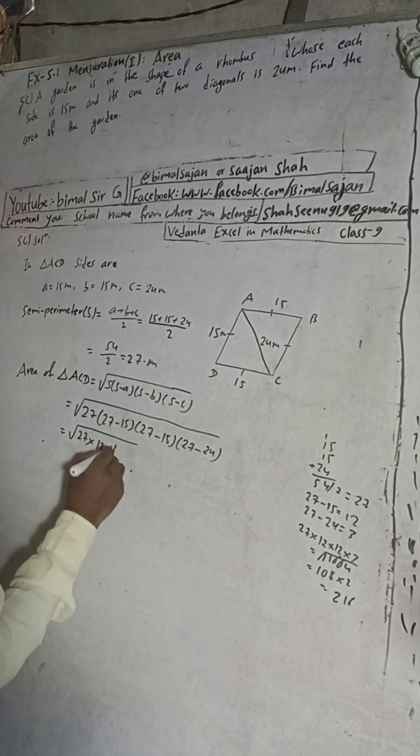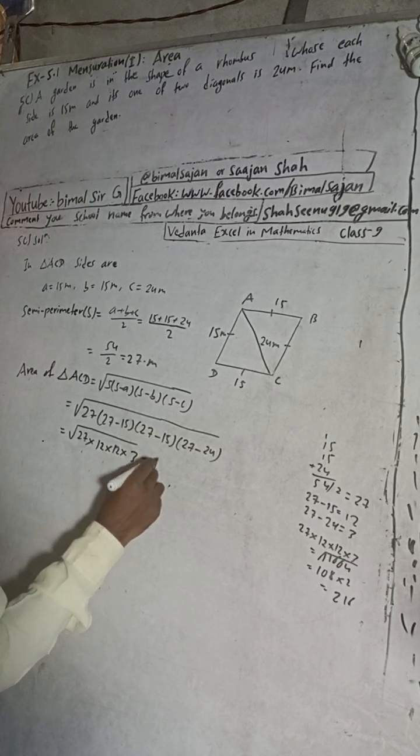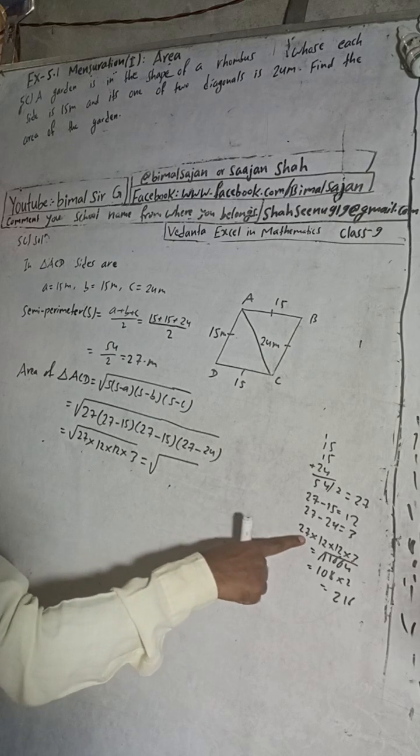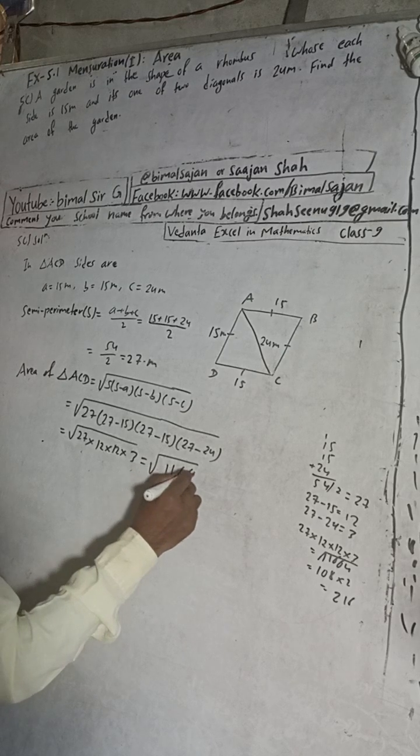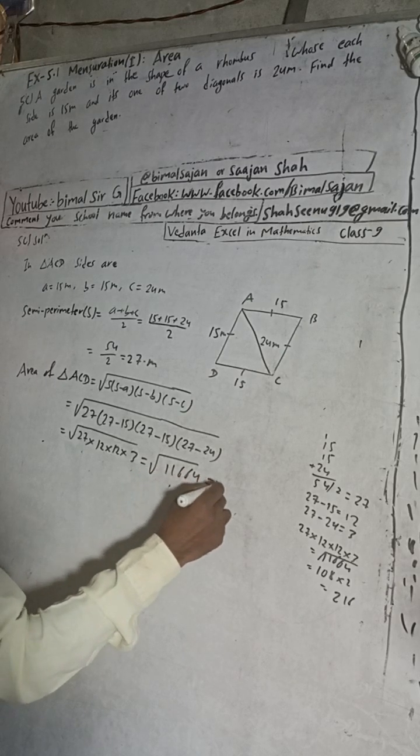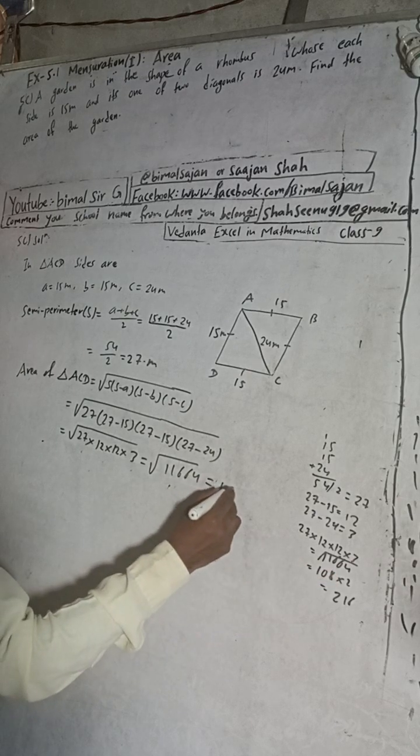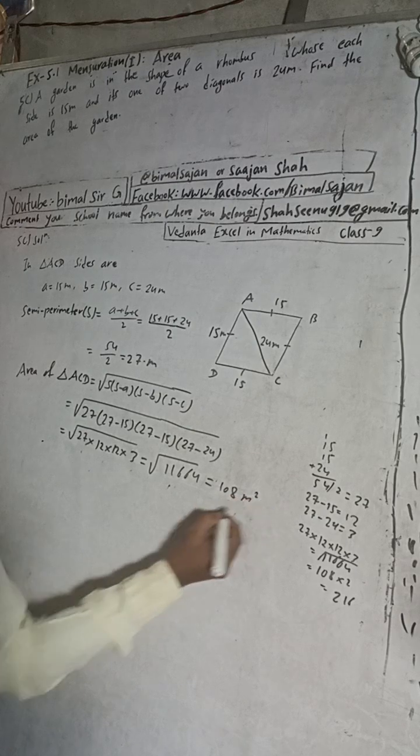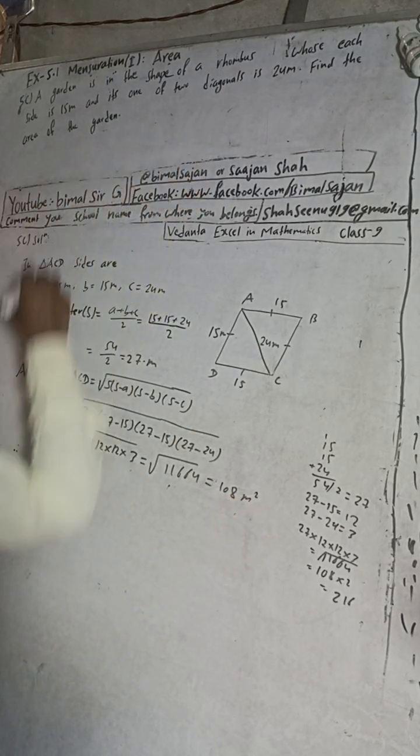27 minus 15 is 12, into 27 minus 24 is 3. When you multiply all these in the calculator you will get 27 times 12 times 12 times 3 equals 11,664, and root of this will be 108 meters square.